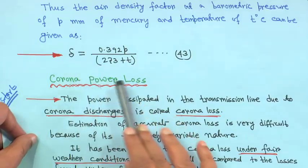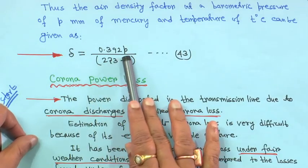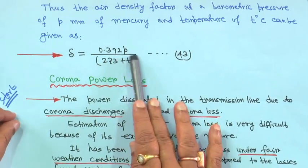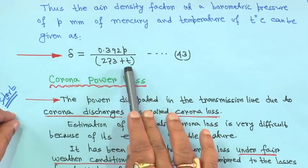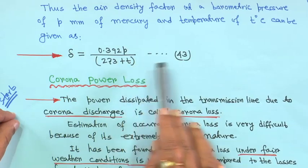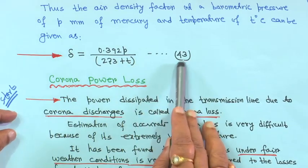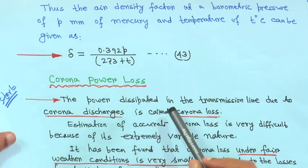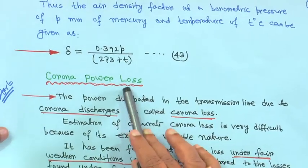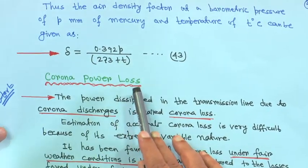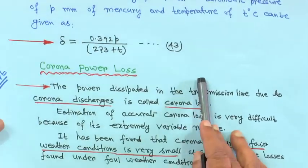We have seen that delta is equal to 0.392P divided by (273 + T), which is equation 43. Now we will come to corona power loss.